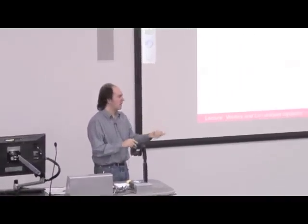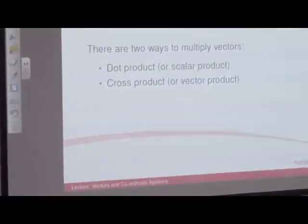Now, vector multiplication. This is a bit tougher and we're going to go through it because we use it throughout dynamics. It's very useful for some of the concepts, and you'll cover the details of how you multiply vectors in your maths course. With vectors there are two ways you can multiply them together: there's the dot product and the cross product, also known as the scalar or the vector product.